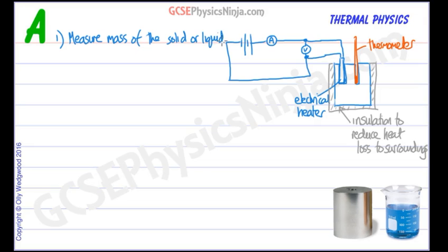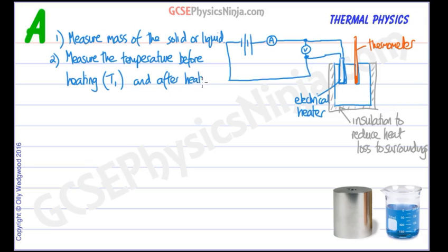So we'd use a weighing scales for that. Number two, we would measure the temperature before heating. So we'll call that T1 and after heating and we'd call that T2 and we know that the change in temperature would simply be the end temperature minus the initial temperature, the final temperature minus the initial temperature.